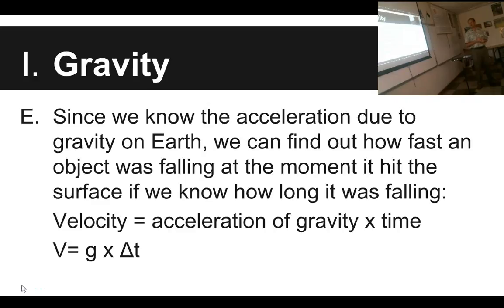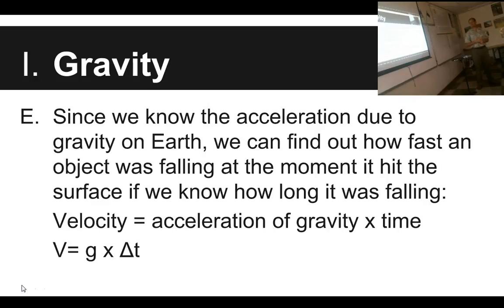There was a famous experiment done on the moon where an astronaut brought a feather. He held the feather and a rock, dropped them both, and they hit the surface of the moon at the same time. The only reason a feather normally flutters on Earth is because it reaches terminal velocity very quickly — it's so broad and light. But with almost no atmosphere on the moon, the rock and the feather hit the ground at the same time, demonstrating this principle on video.